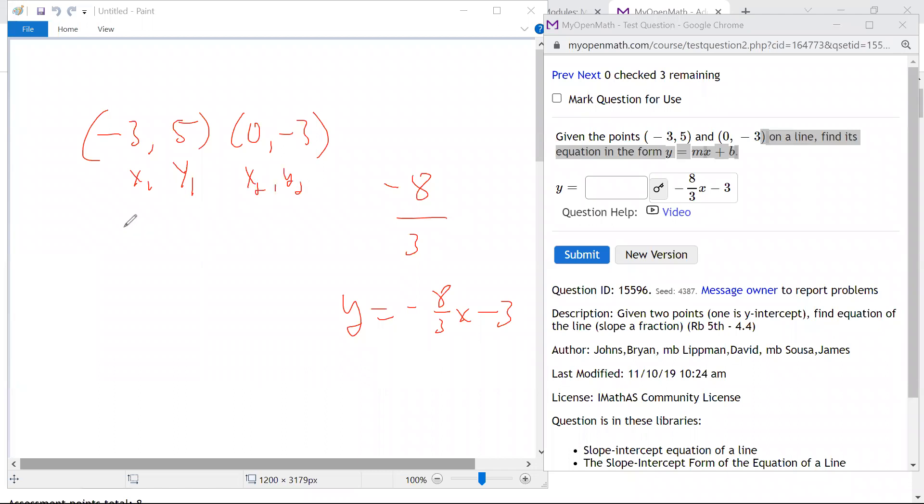This is x sub 2, y sub 2, and the formula is y sub 2 minus y sub 1. So negative 3 minus 5 over x sub 2 minus x sub 1. Remember, y's over x's. So 0 minus minus 3. Well, minus and minus turns to positive. Negative 3 minus 5 is negative 8. And 0 plus 3 is 3, so we get the same answer.